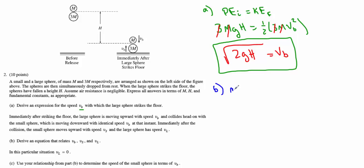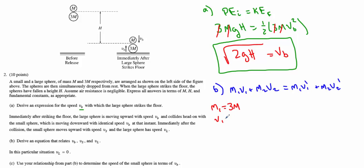Right before the collision: M1·V1 plus M2·V2. Right after: M1·V1' plus M2·V2'. Knowns: M1 is the larger mass 3M, V1 is upward VB (treating upward as positive). M2 is the smaller mass big M, and V2 is negative VB (moving down). After the collision, V1' is VL and V2' is VS.